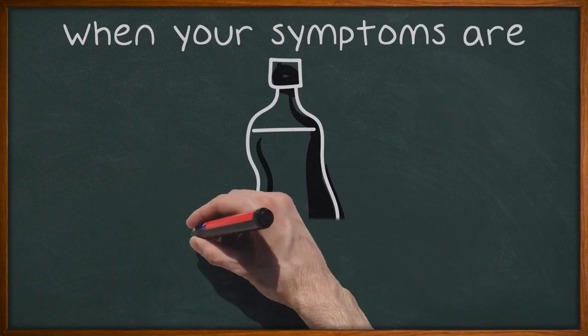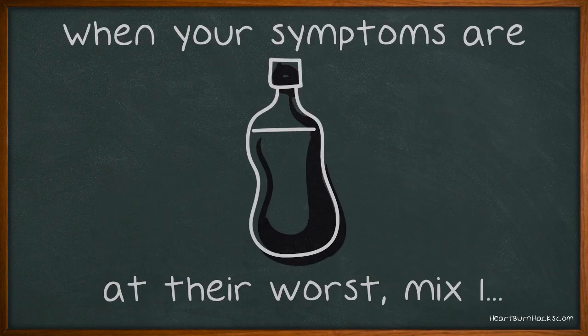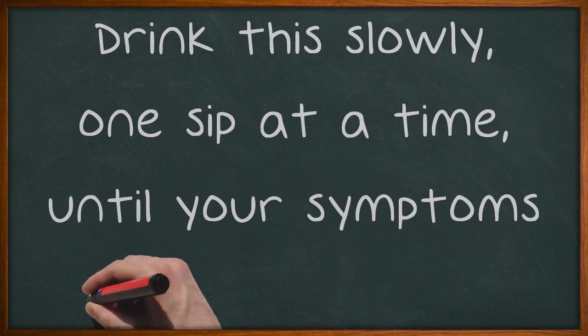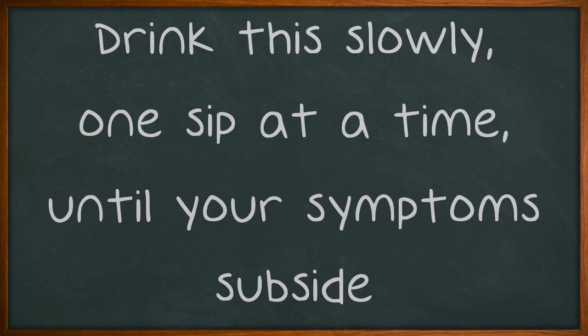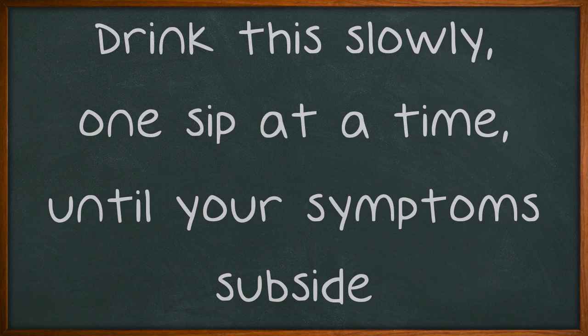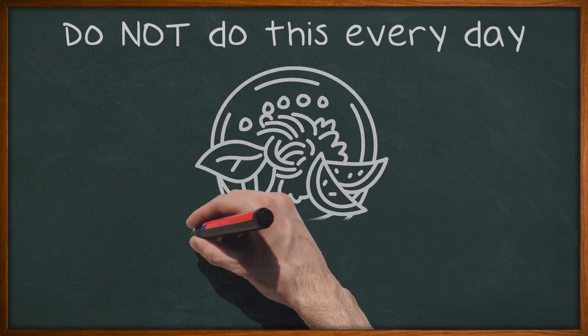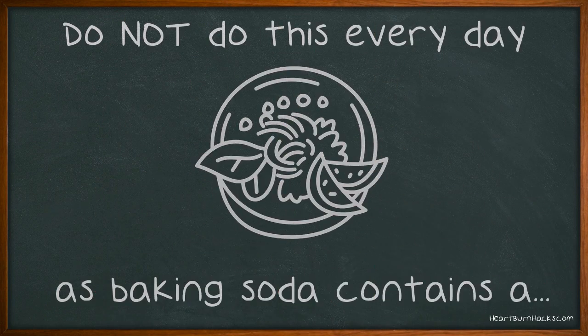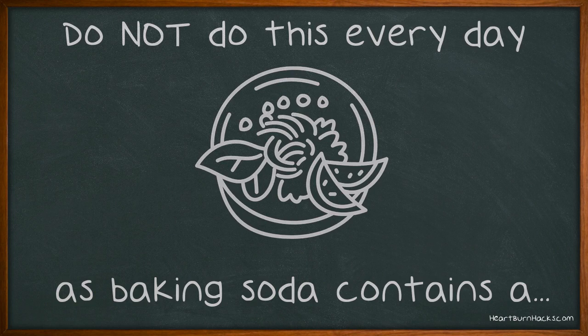When your symptoms are at their worst, mix one teaspoon of regular baking soda with eight ounces of water. Drink this slowly, one sip at a time, until your symptoms subside. Do not do this every day, as baking soda contains a great deal of sodium which can lead to a myriad of other health problems.